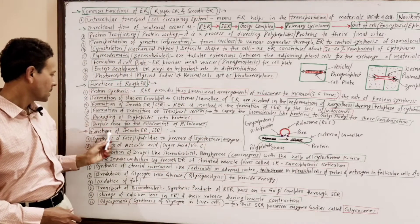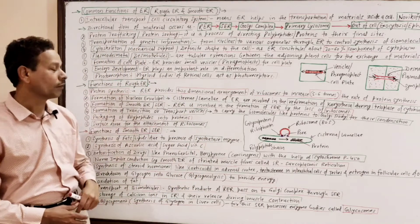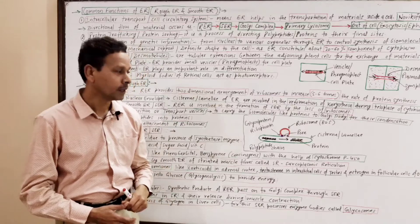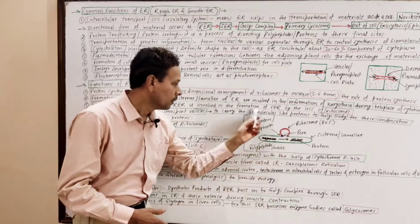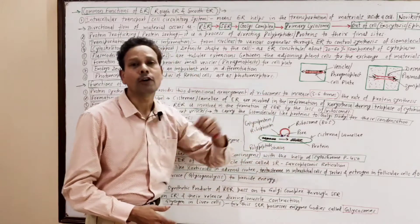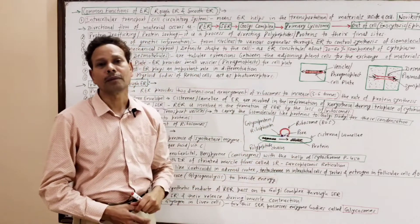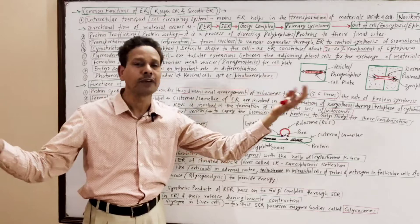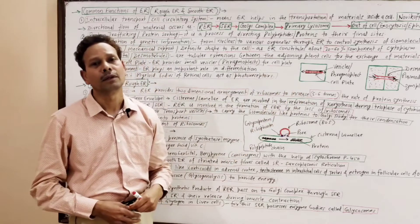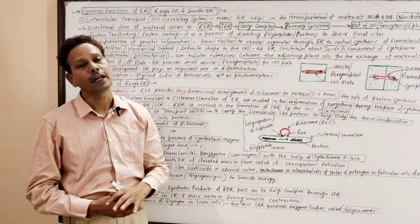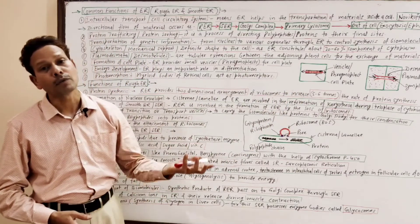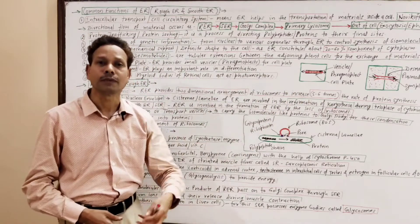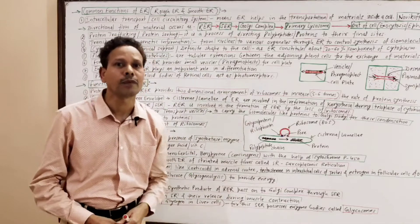Surface area for attachment of ribosomes: the Rough Endoplasmic Reticulum provides surface area for the attachment of ribosomes, which are protein factories involved in the synthesis of proteins and enzymes.